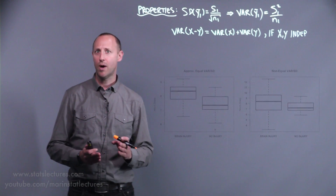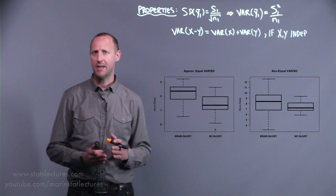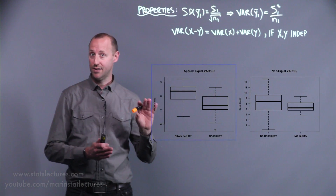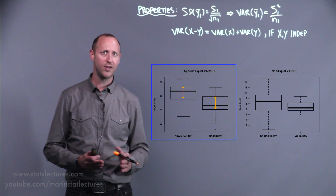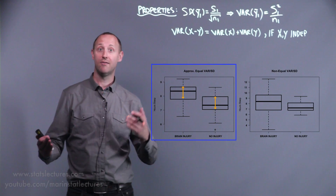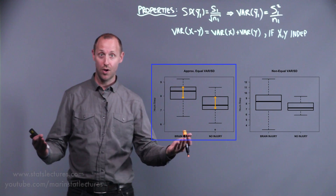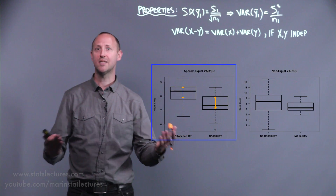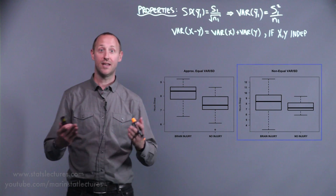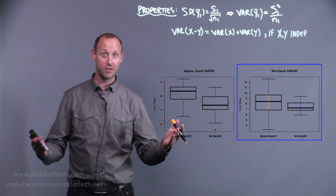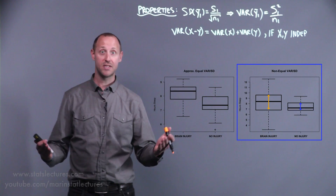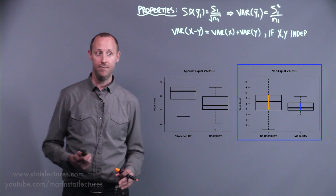The way we approach the analysis depends on whether we think the two groups have roughly the same variability — and we can assume that the variability in group one and group two are two different estimates of the same thing — versus whether one group is much more variable and we need to keep their two estimates of variability separate.